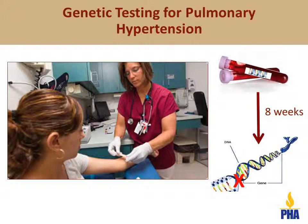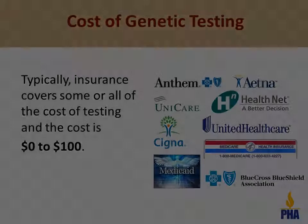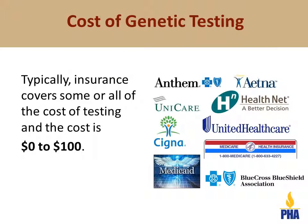If you or your family wanted to know about a genetic cause for the pulmonary hypertension in your family, this can be done with a simple blood test. Typically, insurance covers some or all of the cost of testing. We will determine what your insurance will cover before testing is started. Typically, for patients with private insurance, the out-of-pocket cost will be $0 to $100. There are also options for genetic testing for patients with Medicaid and Medicare. Ask your doctor or genetic counselor for additional details.